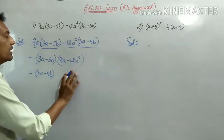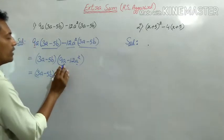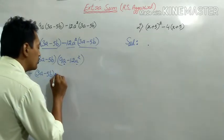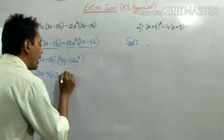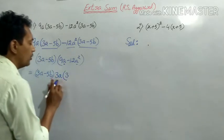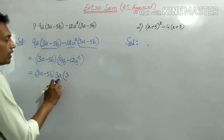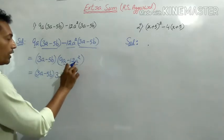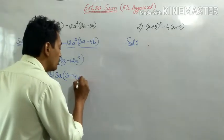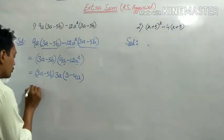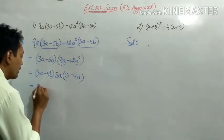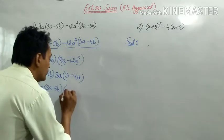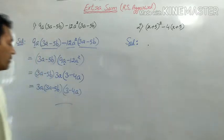यहाँ पर और भी कुछ common चीज़ें निकल सकती हैं। यहाँ पर a square और a है, यानी a common निकल सकता है। और 9 और 12 का common factor है 3 — तो 3a common निकाल सकते हो। Bracket में से क्या बचेगा: 9 में से 3 common निकला तो 3 बचा, और 12 में से 3 common निकला तो 4 बचा, और a square में से 1 a common निकाला तो a बचा। So the factorization is: 3a into (3a minus 5b) into (3 minus 4a).